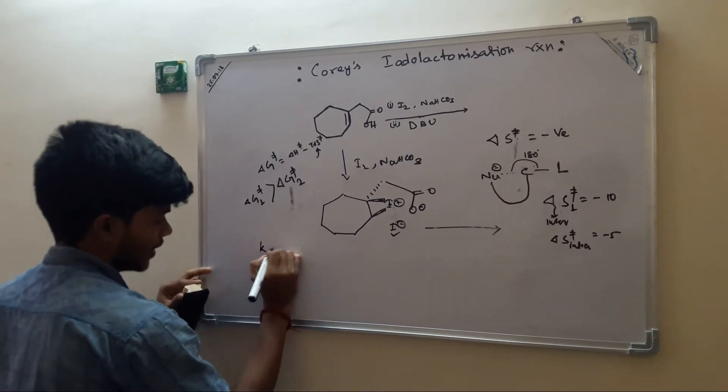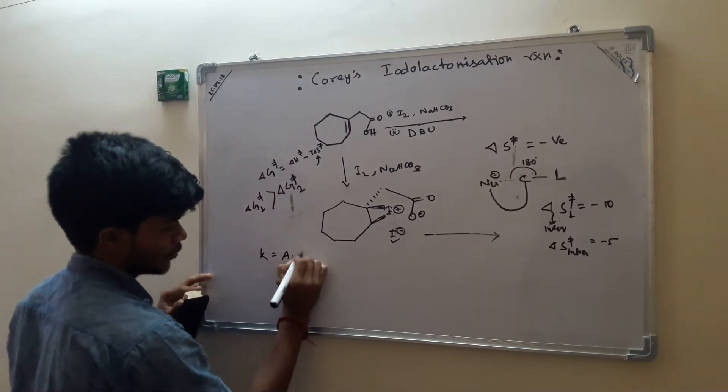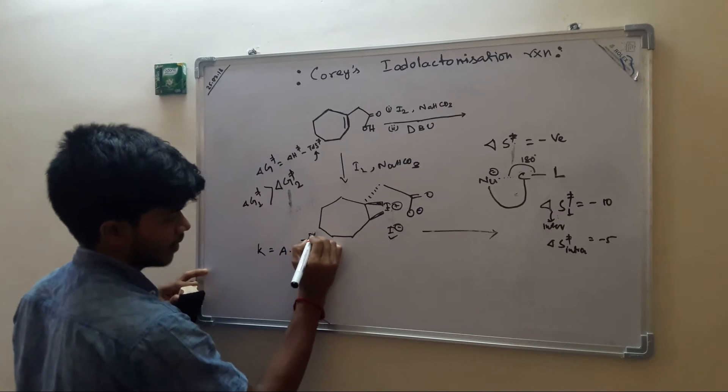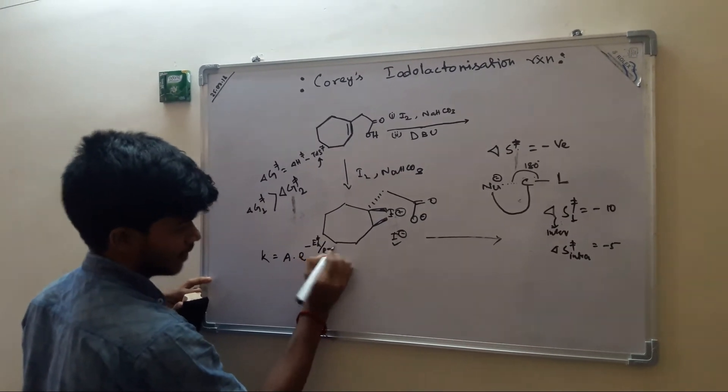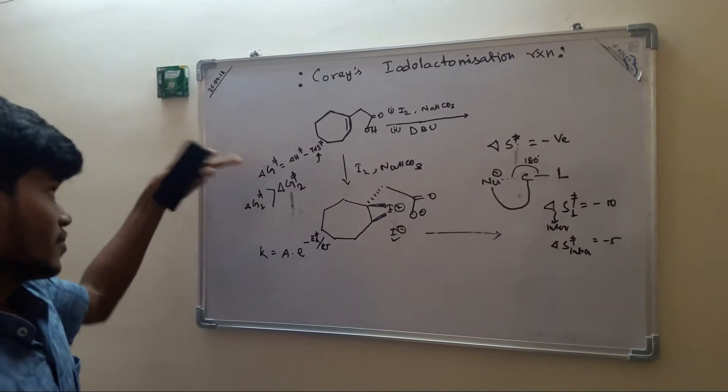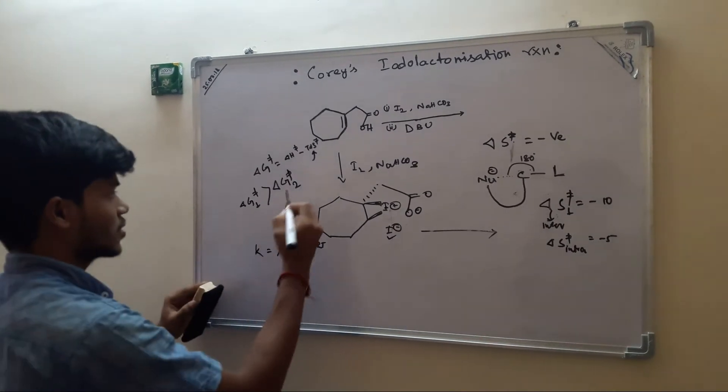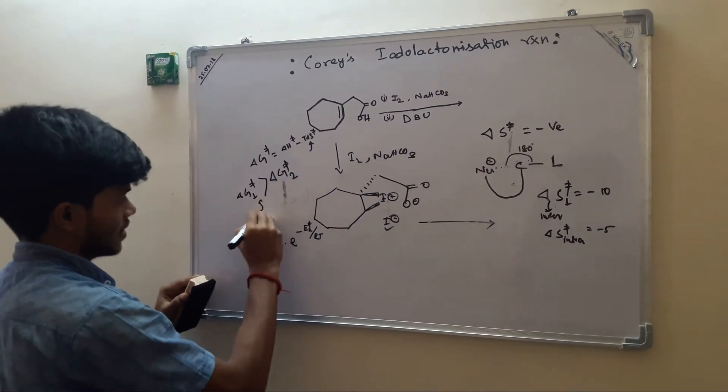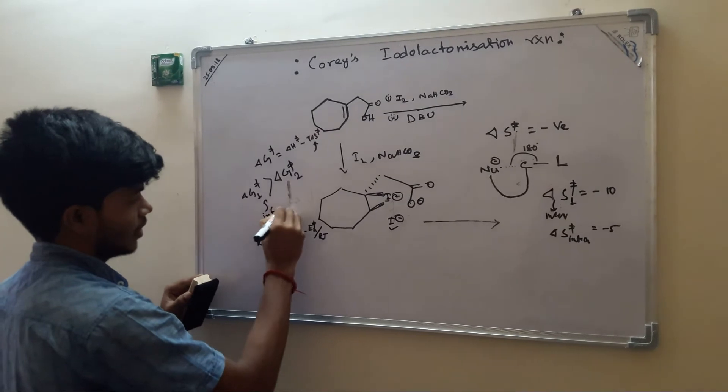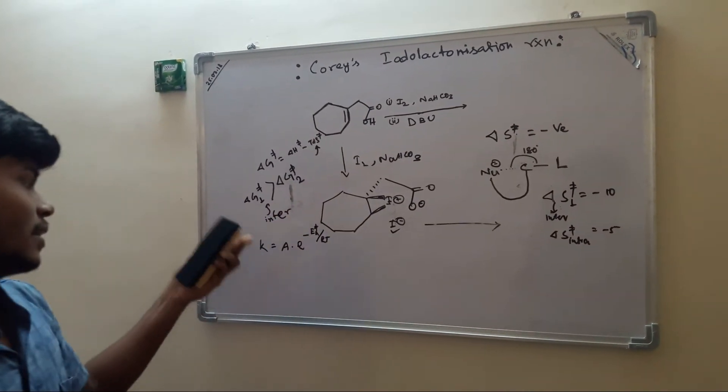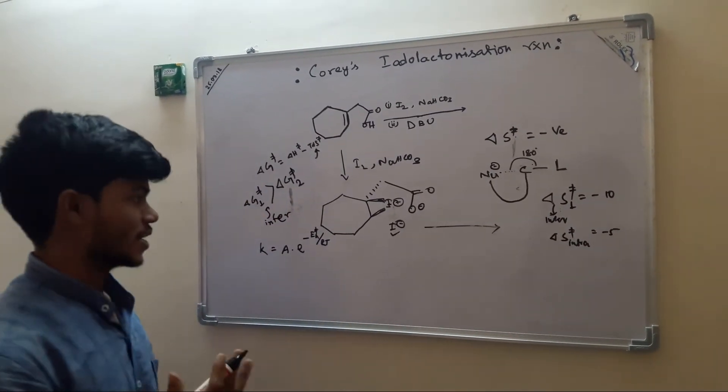We all know the rate equals A into e to the power minus Ea double dagger by RT, which is the free energy of activation. So intermolecular reaction should be slower compared to intramolecular reaction.